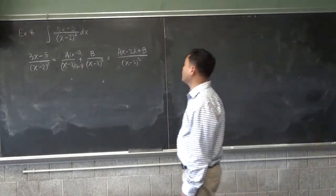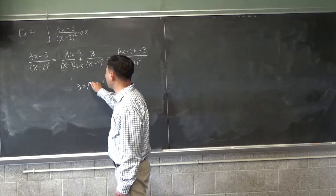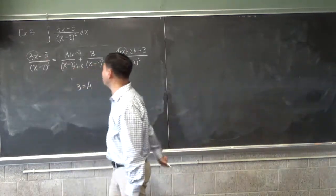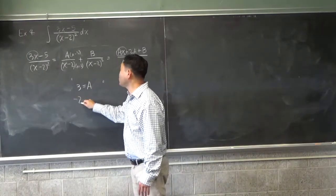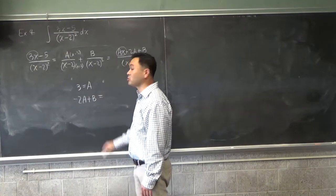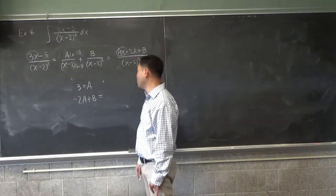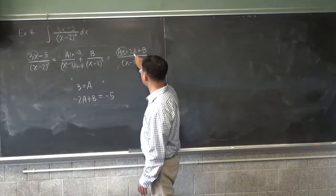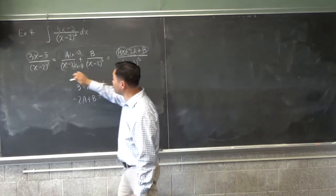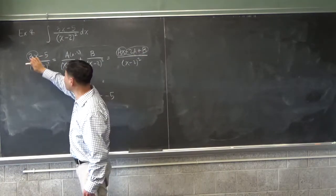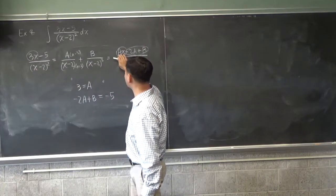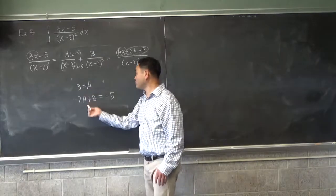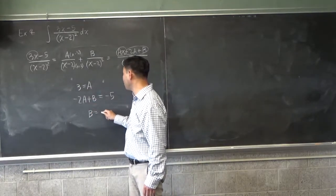Okay. But then you have 3 equals to A because Ax is the only x term, right? And then you have negative 2A plus B. This one should equal to negative 5, right? This is the constant term. This is the one without x. So it has to match with negative 5. So 3x should match with Ax and negative 5 should match with negative 2A plus B. And since we have A as 3, you plug it in here and you get B equals to 1.